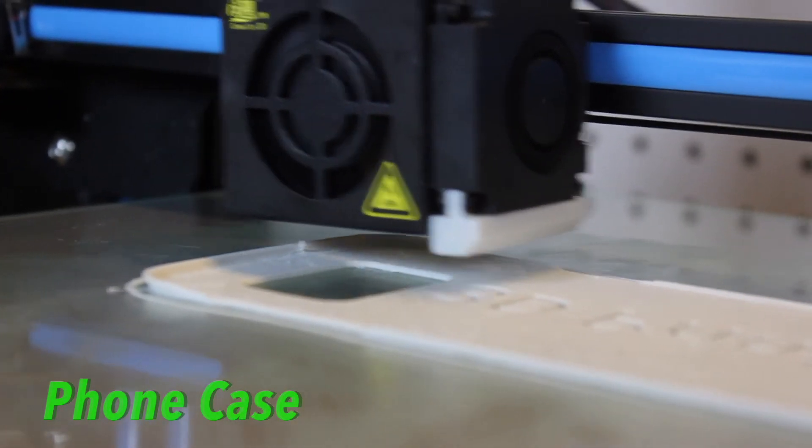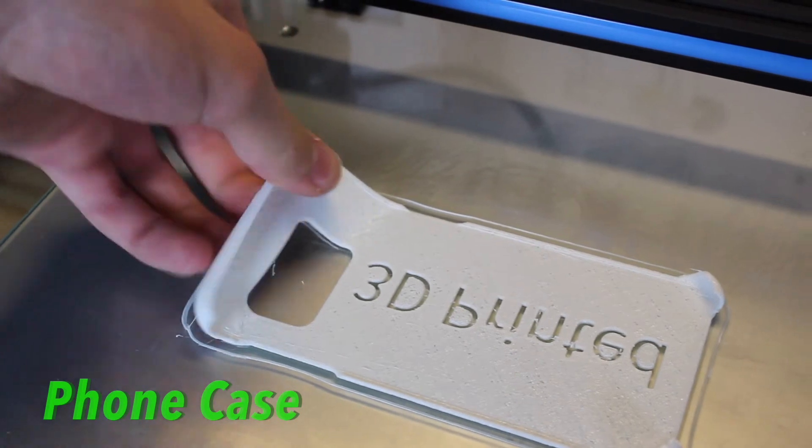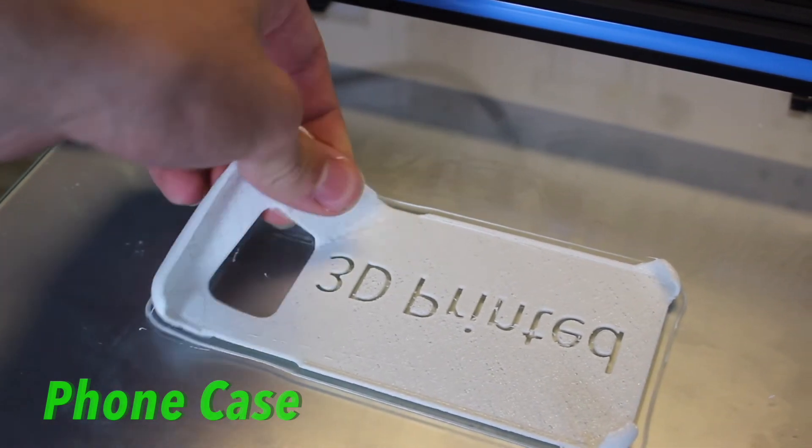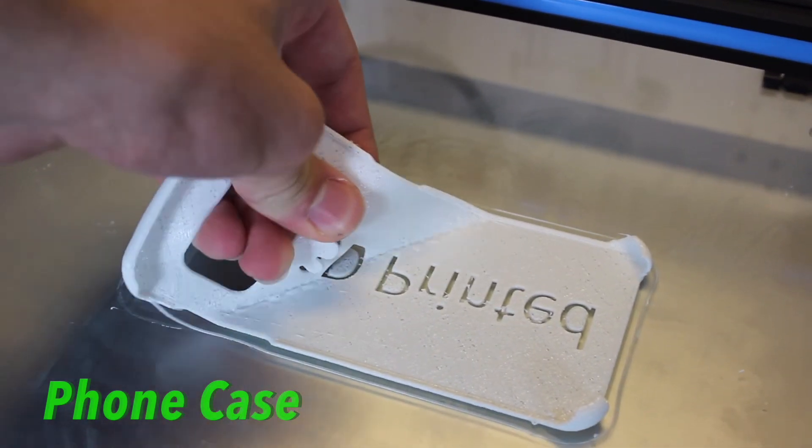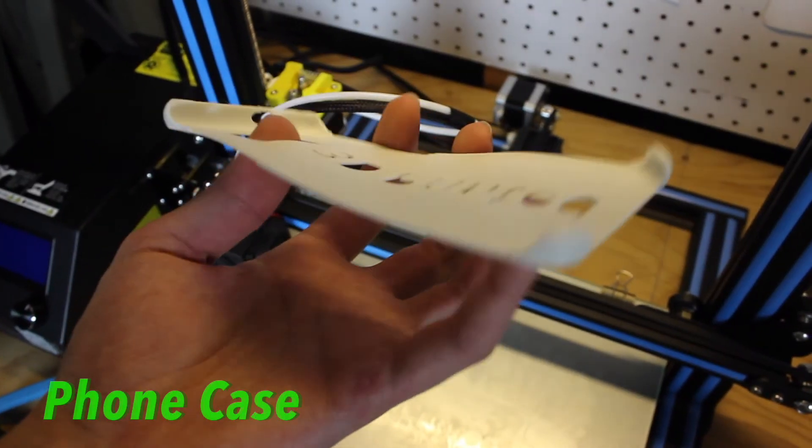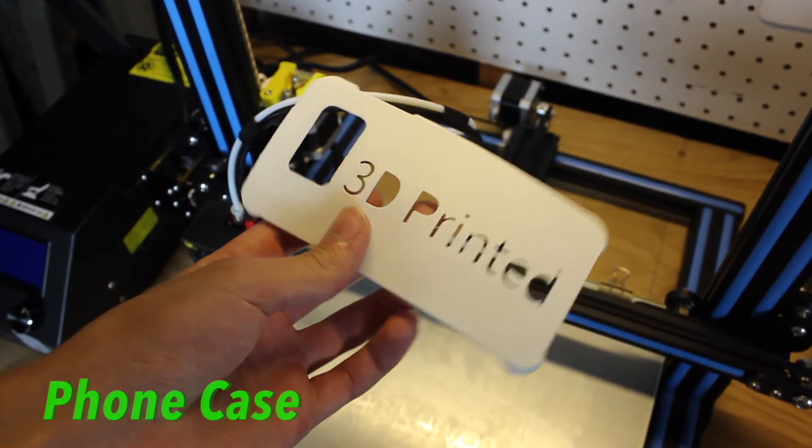Finally I printed another thing with the Flex Mark 9 which was a phone case for my Samsung Galaxy S7 Edge. This turned out great. The letters turned out crisp and clear. I printed this with no support and the bridges turned out pretty well. And this fit my phone perfectly.